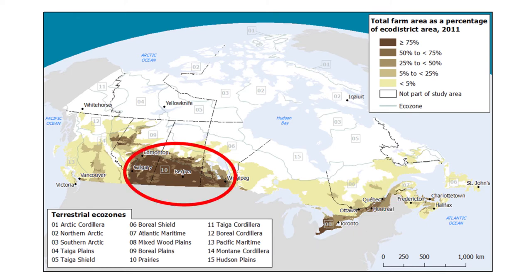The next region is the prairies, of course, which are a major agricultural region. It's hard to generalize in terms of crop mix and weather for an area so large — the prairies stretch from Manitoba to Alberta, so there's quite a bit of diversity within this region. As a general rule, the prairies would be considered very dry, so water is a limitation. The frost-free period is also shorter than in Ontario, giving them a very short growing season with very cold winters.